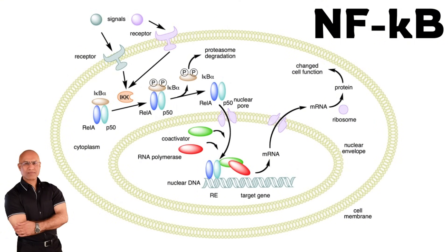You can imagine that promoter regions are a kind of lock on the gene and transcription factors are the key. NF-kappa B is a master key for genes related to the inflammatory system, the immune system, and the cell survival system. So NF-kappa B is a master regulator of gene expression — for genes related with inflammation, genes related with the immune system, and genes related with cell survival. Every cell has this master key.